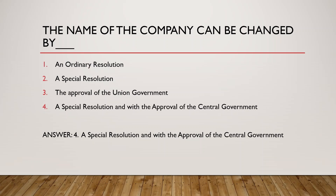Next question: The name of the company can be changed by — what? Whenever we do anything in a company, we need to pass a resolution — either an ordinary resolution or a special resolution. Ordinary resolution covers only four items: annual return, appointment of a director in place of one who retires, appointment of auditor and fixation of their remuneration, and payment of dividend. All other items come under special resolution. Sometimes you also need government approval along with passing a resolution.